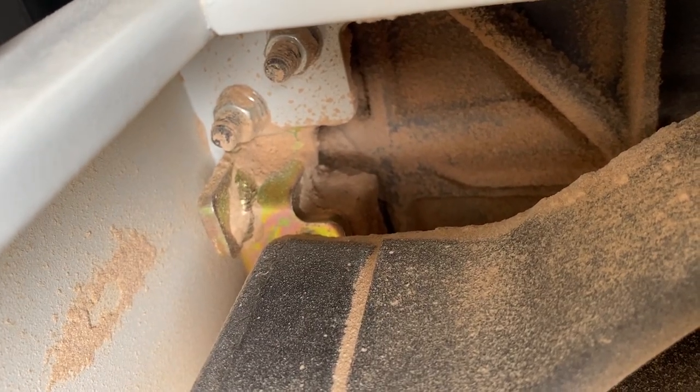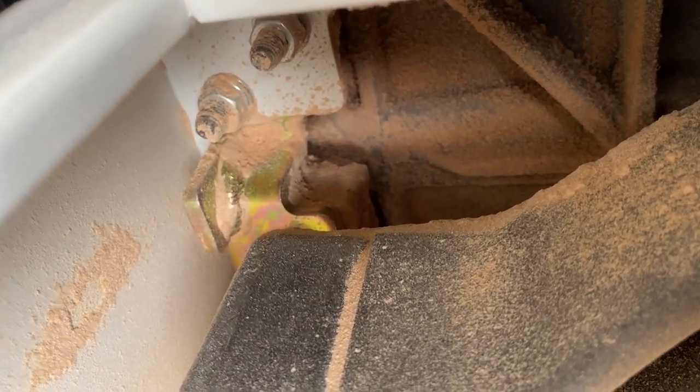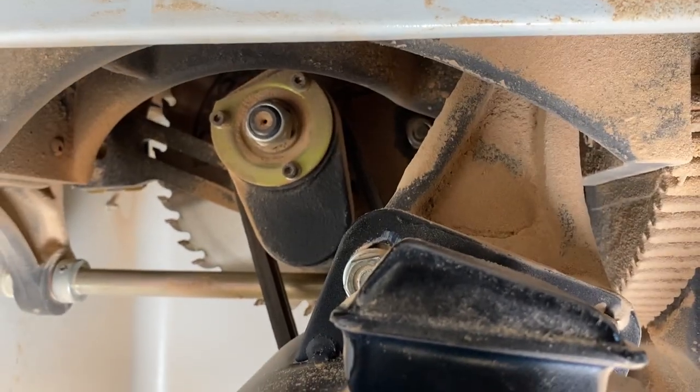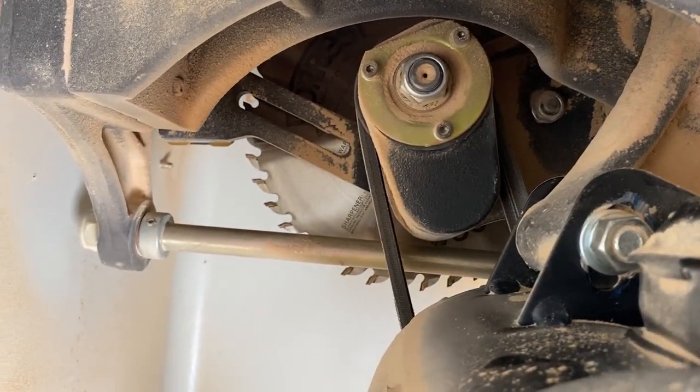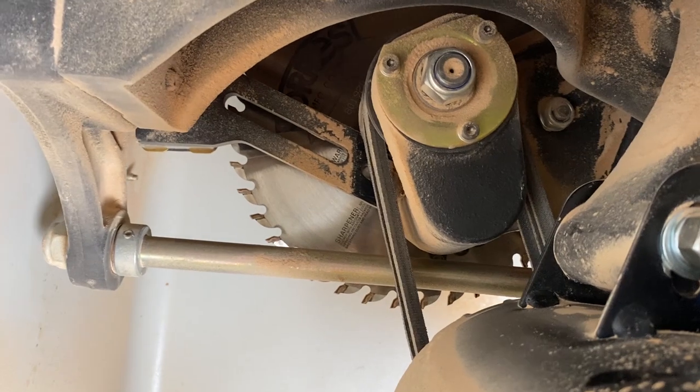Cabinet saw trunnion is usually mounted to the saw cabinet body and not hang off the cast iron table as it is on the hybrid and contractor saws. This will prevent the top from sagging over time under the weight of the motor and trunnion.